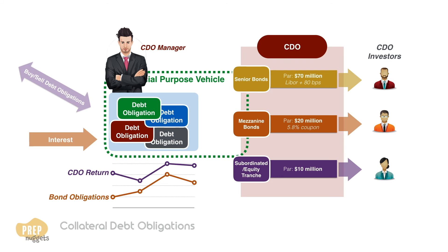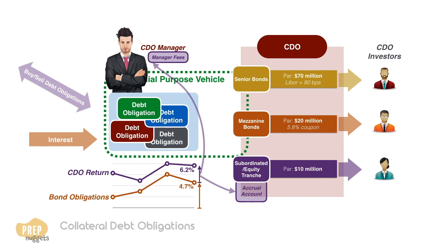For example, if the aggregate cost of the bond obligations is 4.7% and the return of the CDO for the period is 6.2%, the 4.7% goes to pay the bond obligations to the senior and mezzanine bond holders, and the excess 1.5% goes to the equity tranche holders and the CDO manager. If the CDO managers take 0.7%, the balance of 0.8% goes to an accrual account for the equity tranche. Note that this 0.8% is based off the total par value of the CDO, so the return to the equity tranche holders is actually 8%, as the equity tranche is only one-tenth of the total par value.